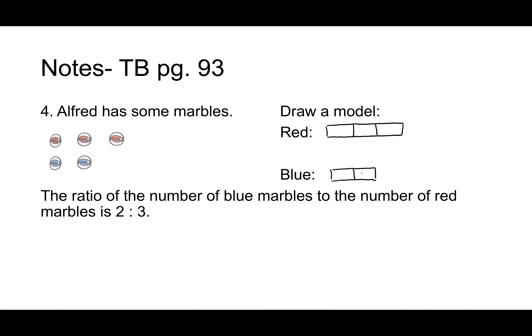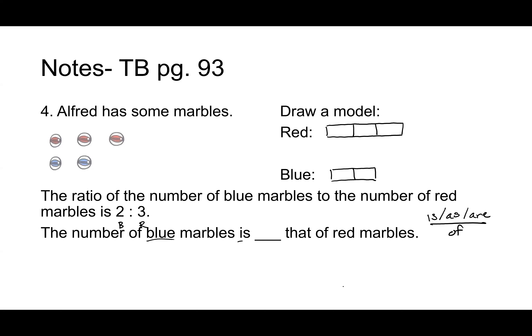The number of blue marbles is blank 'that of' red marbles — that's your prompt to set up the ratio as a fraction. I'll teach you a word-fraction trick: write 'is, as, are' over 'of.' Blue is your 'is' — so blue goes on top. Red is the 'of' — so it's on the bottom. The answer is two-thirds. Two-thirds of red marbles.